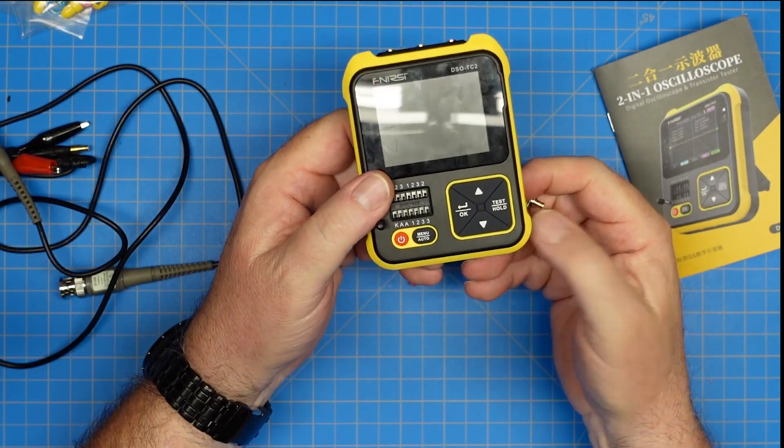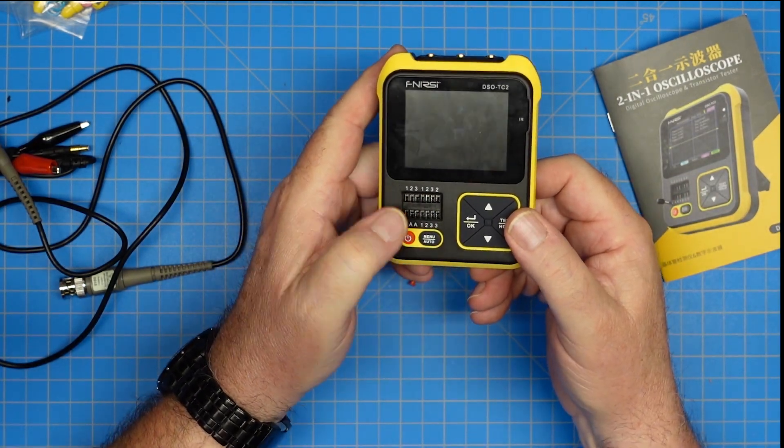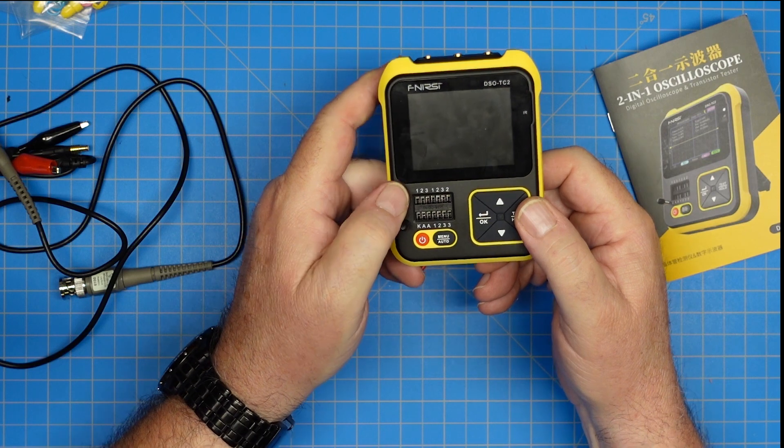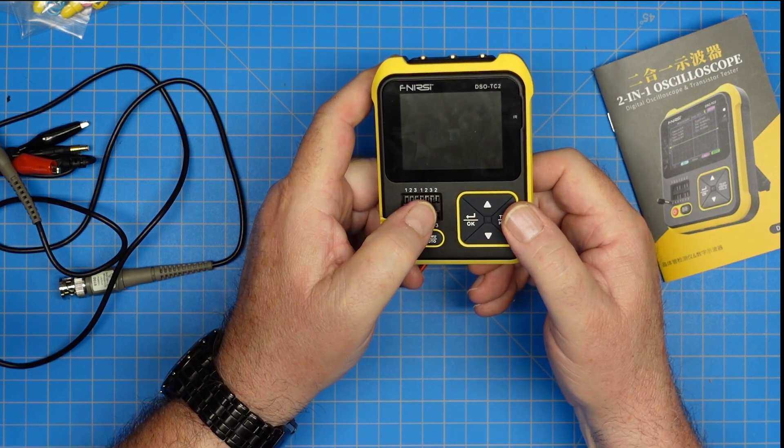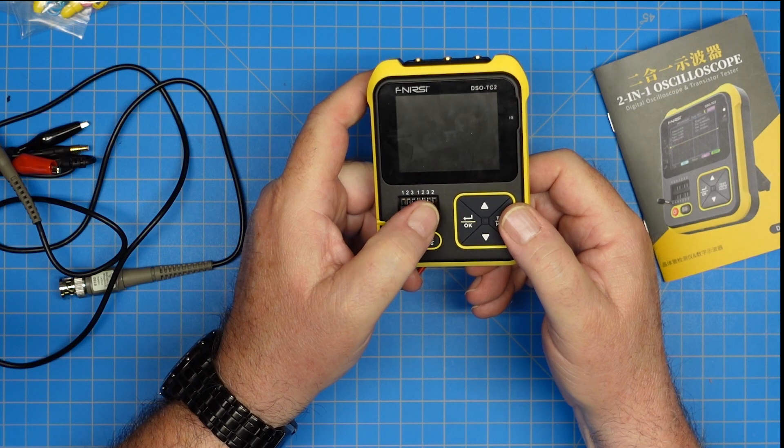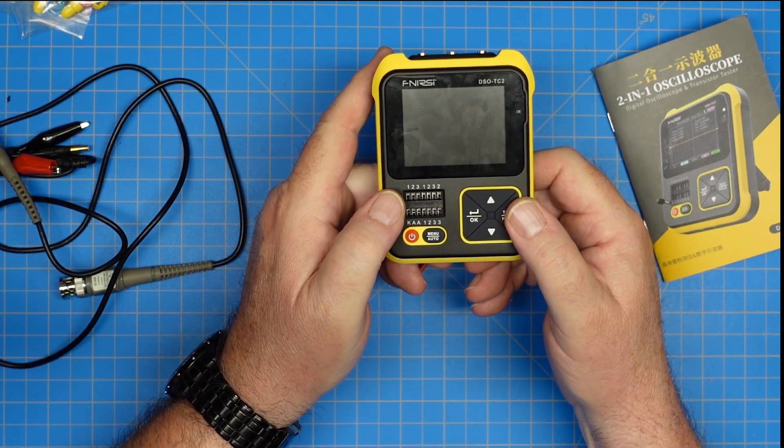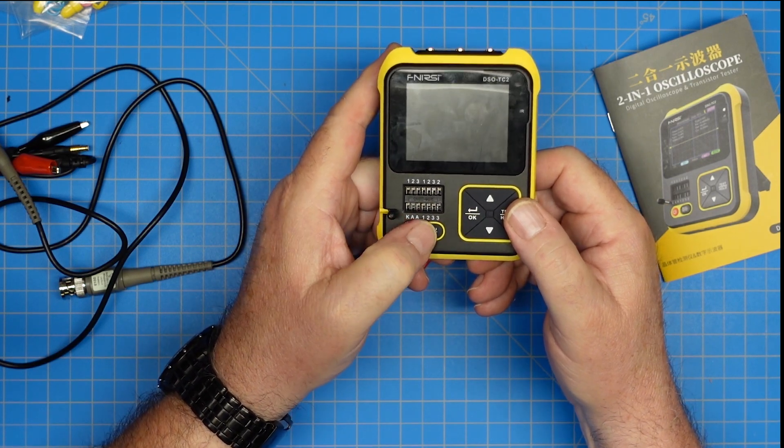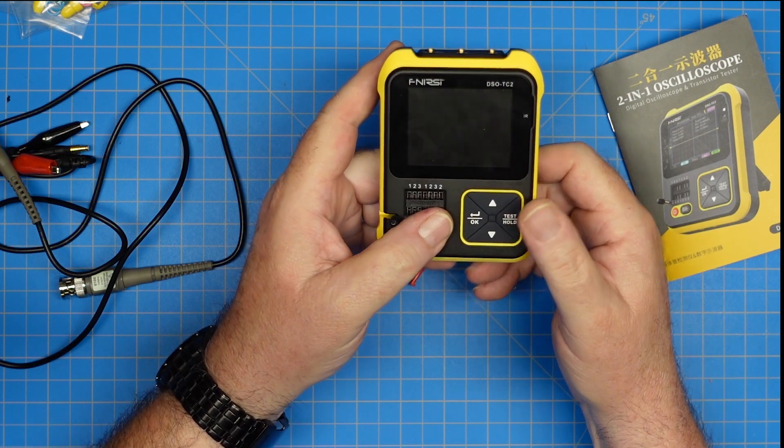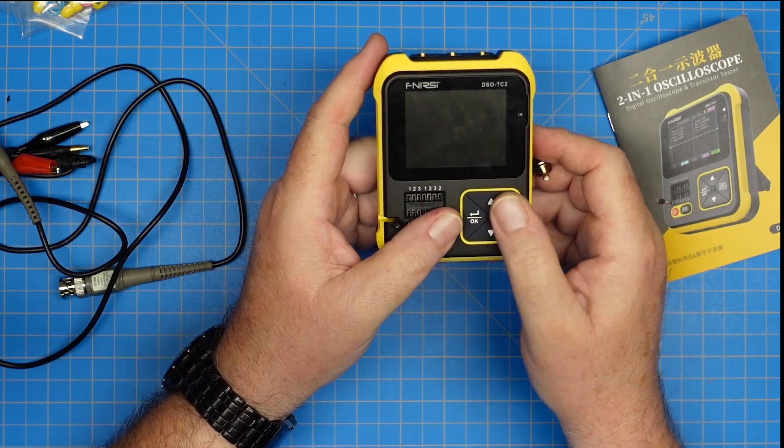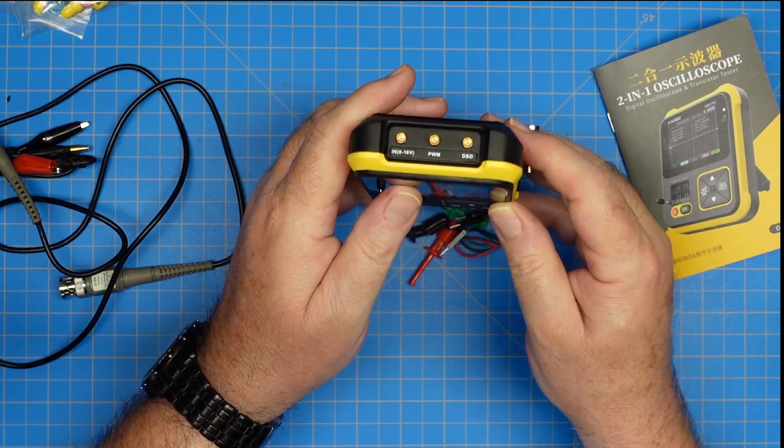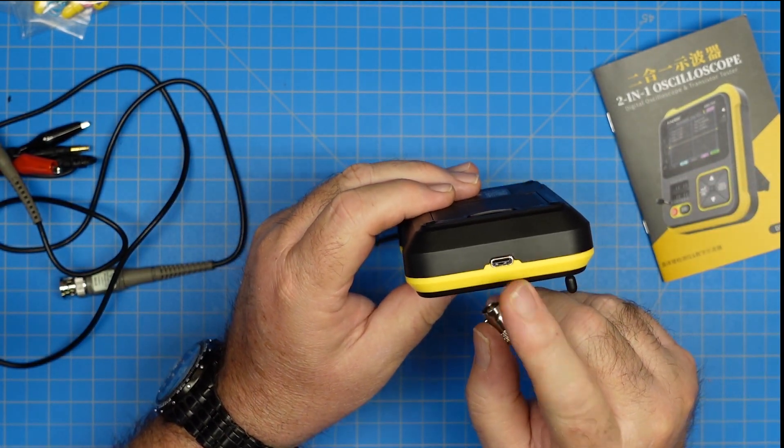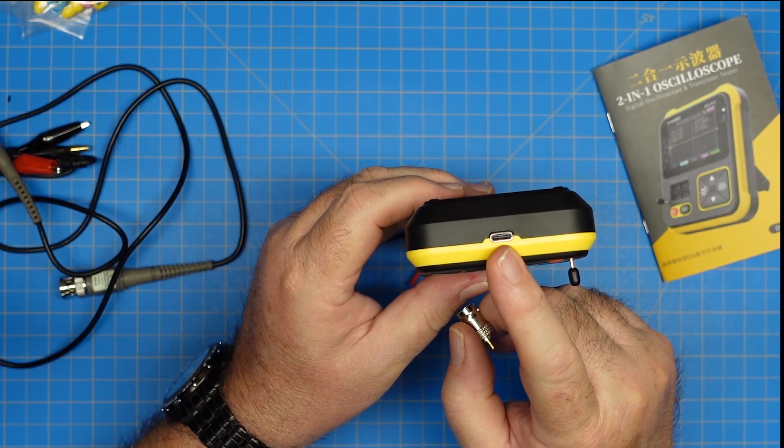So this device does component testing, as you see here. The KAA is used for voltage testing. The 1s, 2s, and 3s are connected to each other. So a 1 down here is the same as a 1 here or a 1 here. Same number, same connection. There's a power button. The menu auto button does a couple functions, depending on whether it's long press or short press. And then these are our navigation and testing buttons.